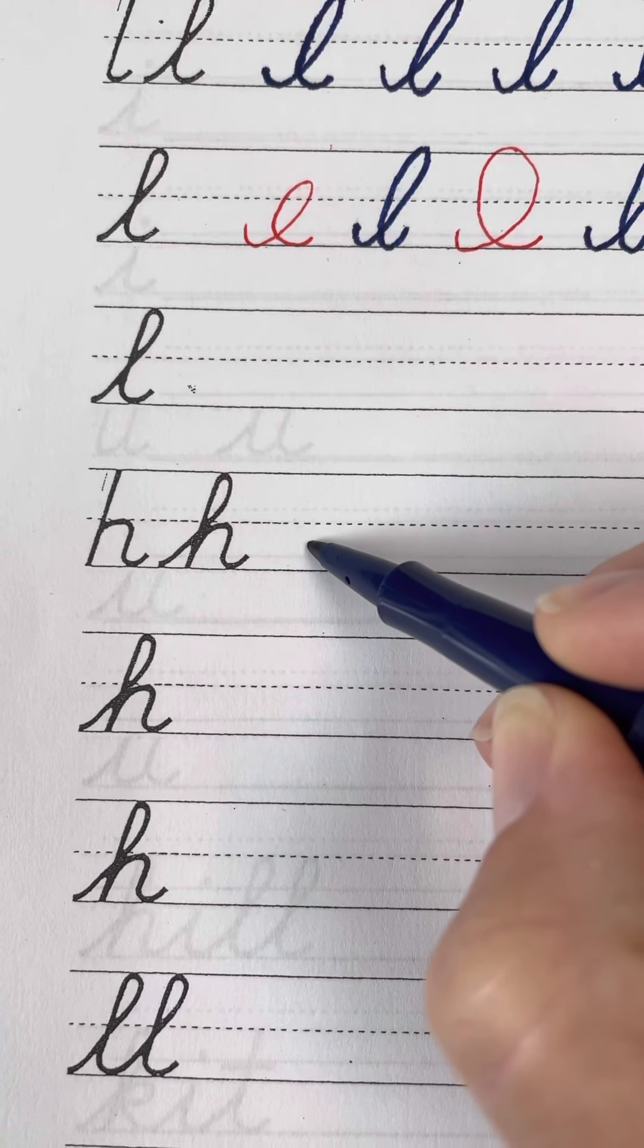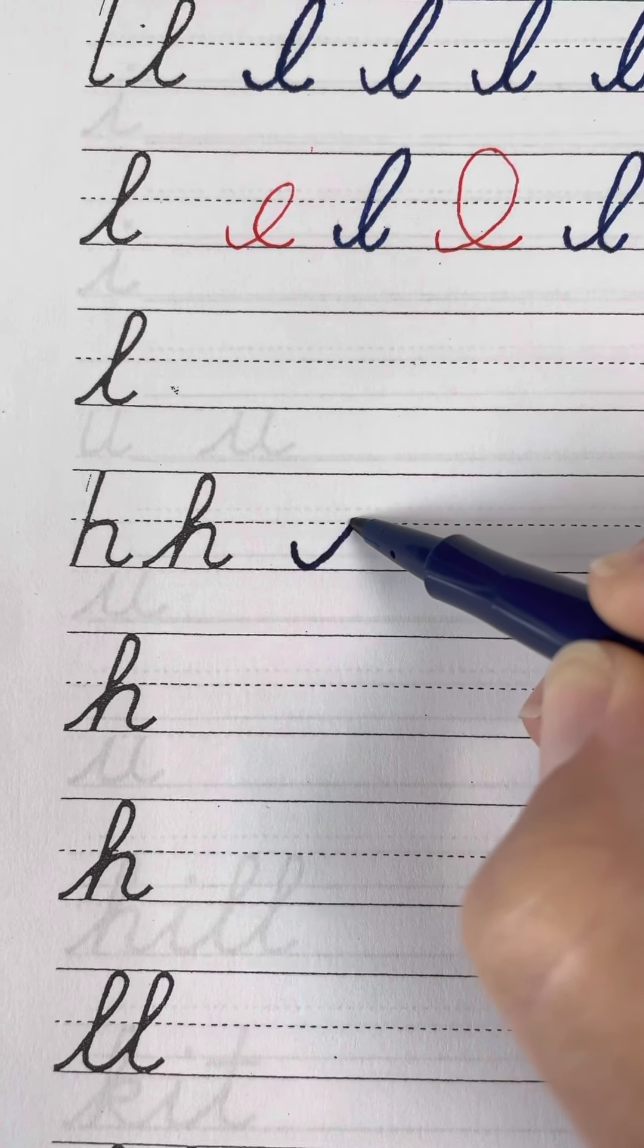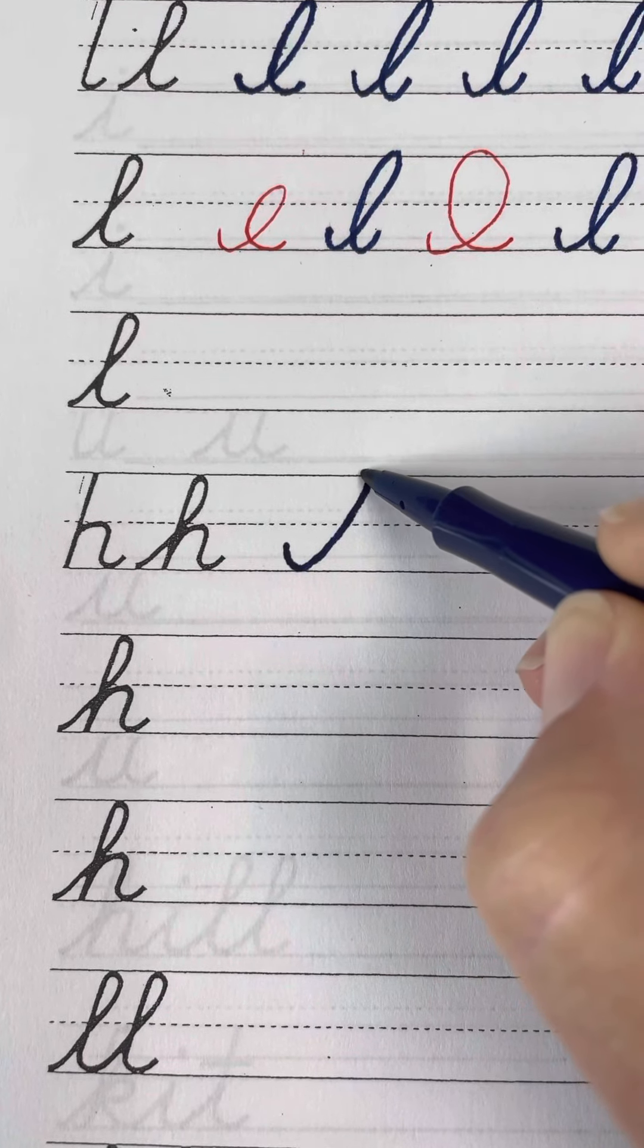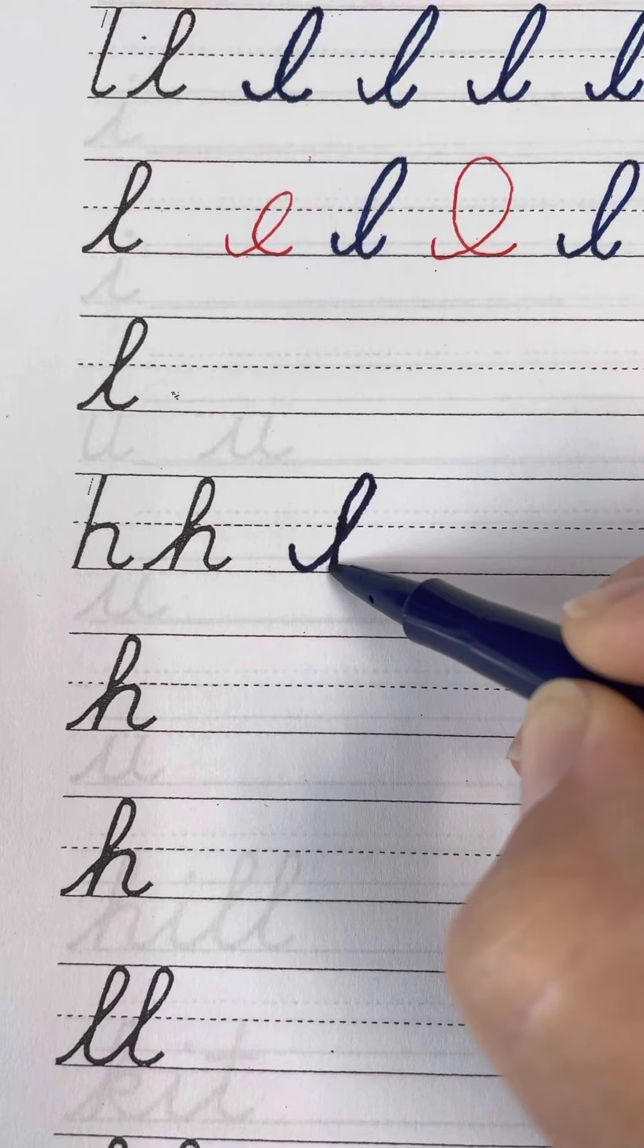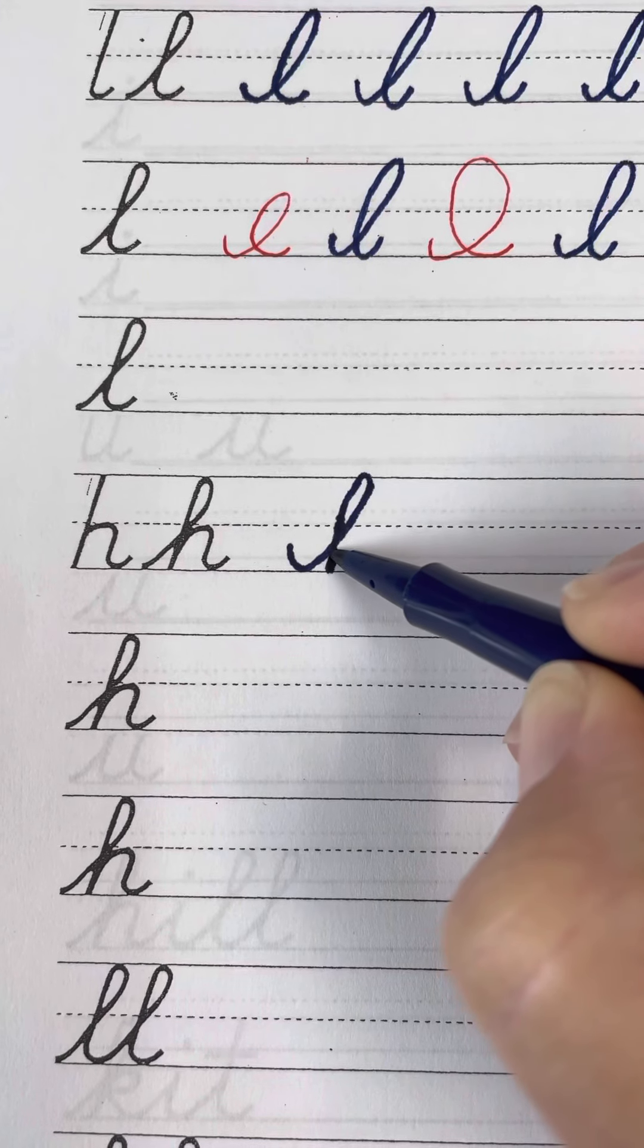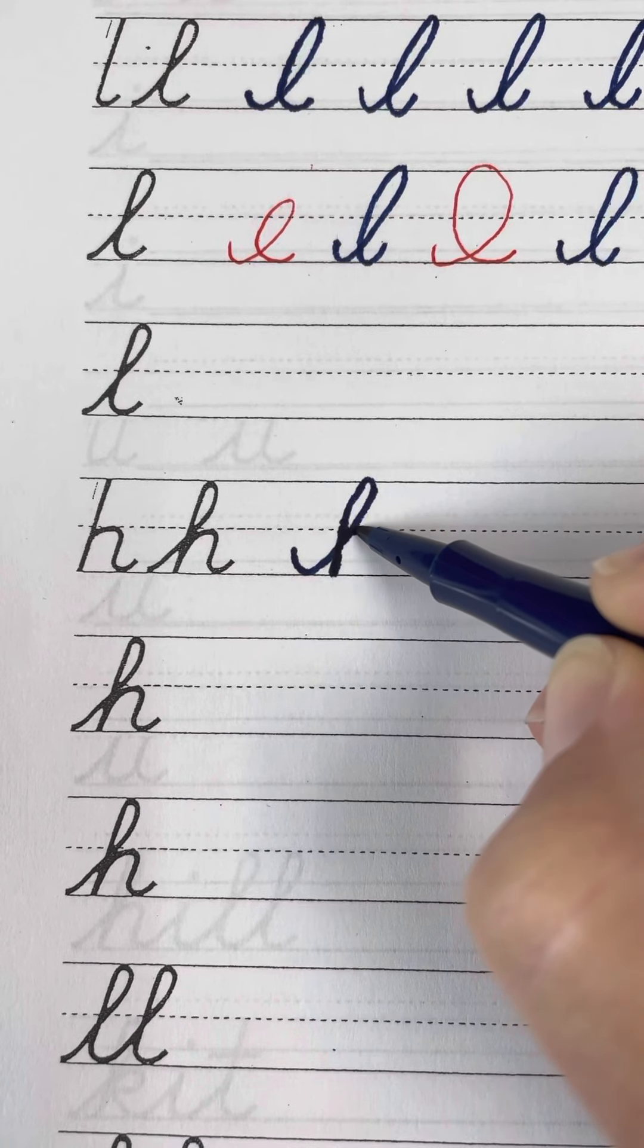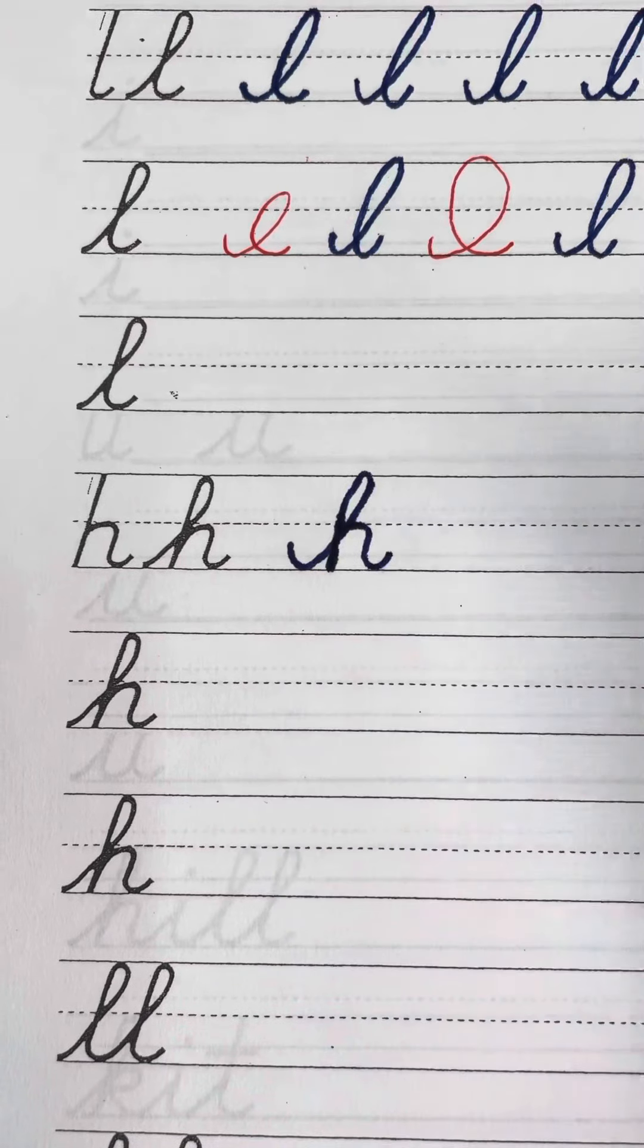So you start with a swoop, you're gonna loop up, touch the top, and when you come back down you're gonna cross right at the dotted line and go straight down. Then I'm gonna retrace back up to make a hill and come out.